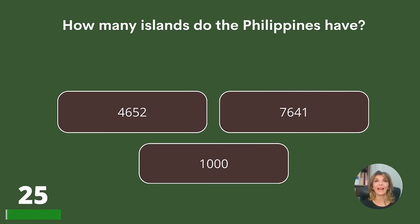How many islands do the Philippines have? Four thousand six hundred fifty-two, seven thousand six hundred forty-one, or one thousand?